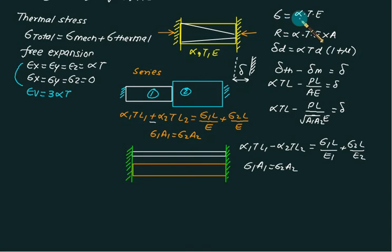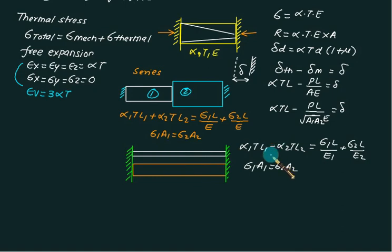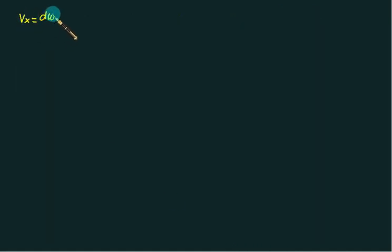For thermal stresses, thermal stress = α·T·E, and the reaction force = α·T·E·A. The diameter change = α·T·d·(1 + μ). If the support yields by δ, then δ_thermal − δ_mechanical = δ. For two bars in series: α·T·L₁ + α·T·L₂ = σ₁L/E + σ₂L/E. For bars in parallel: α₁·T·L₁ − α₂·T·L₂ = mechanical compression, with equilibrium σ₁·A₁ = σ₂·A₂.